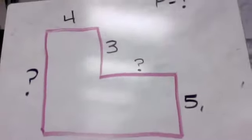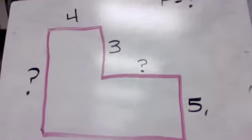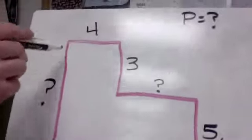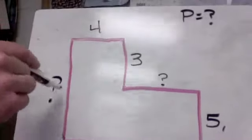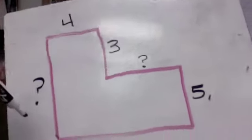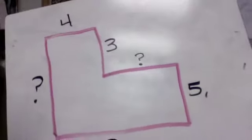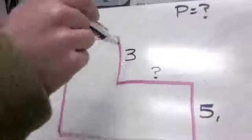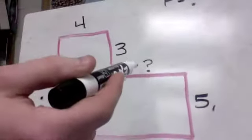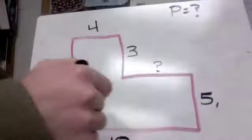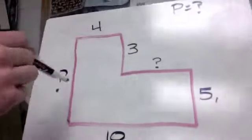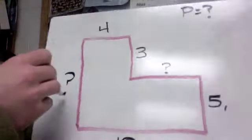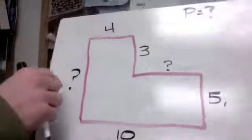For something like this, though, where we have some clearly labeled sides that we do not know, we have to figure out what they are — because we can't just add 10, 5, 3, and 4 and call that the perimeter. It's not all the way around the outside. We need to know what this question mark is and what this question mark is.